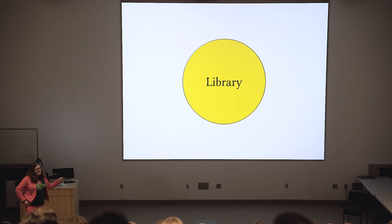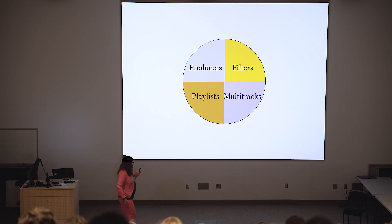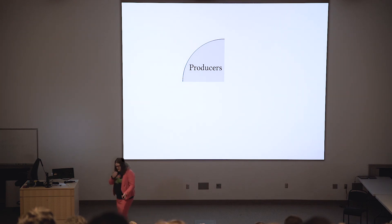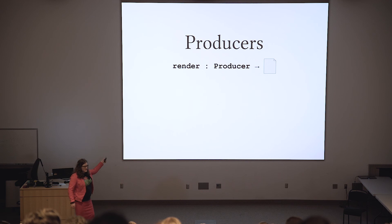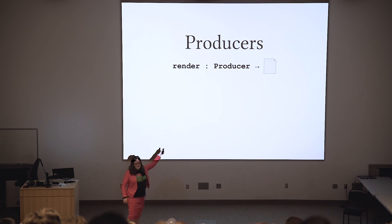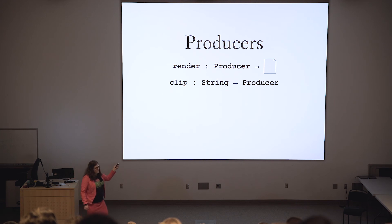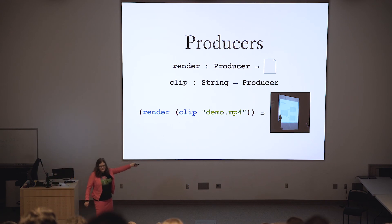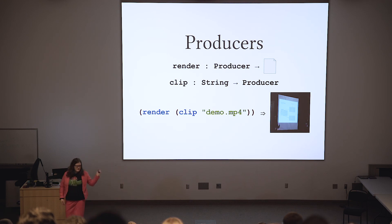Let's take a look at what makes a video editing library. We have four pieces: producers, filters, playlists, and multitracks. Producers are the fundamental atomic part of video editing. A producer is anything that cooperates with render — this render function here — to produce some video file. The most common producer is clip, which takes a path string and returns a producer of that video. When you compose these two together, you're going to get some video outputted, in this case embedded right in the slide. This code is actually running — demo.mp4 is in the same directory as this presentation.